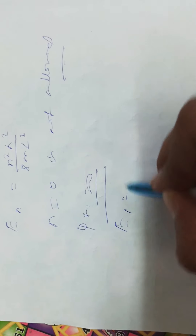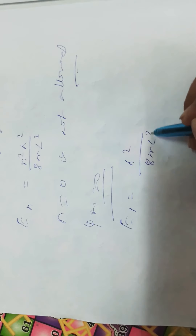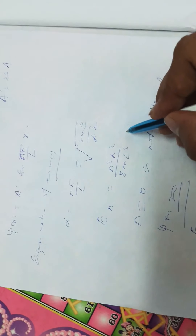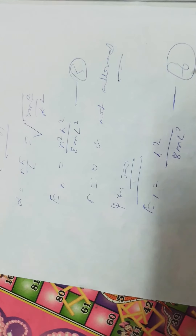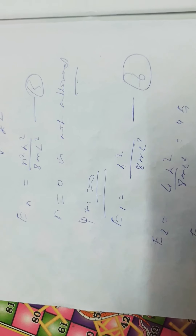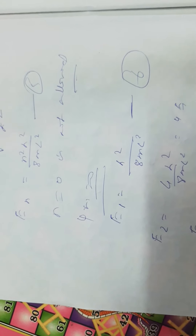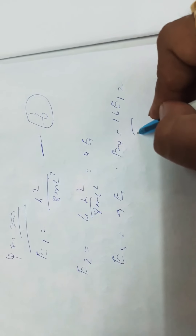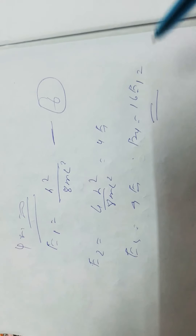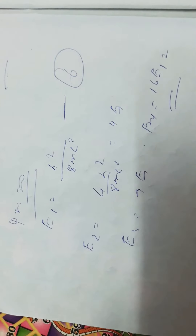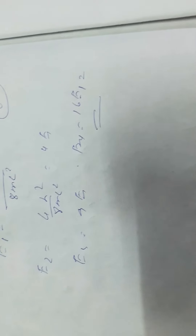The lowest energy value is for n equal to 1: E1 equal to h²/(8ml²). For n equal to 2, E2 equal to 4h²/(8ml²) equal to 4E1. Similarly, E3 equal to 9E1 and E4 equal to 16E1. This means these are the excited energy levels, and the energy levels are not equally spaced — the separation between energy levels increases with increasing n.